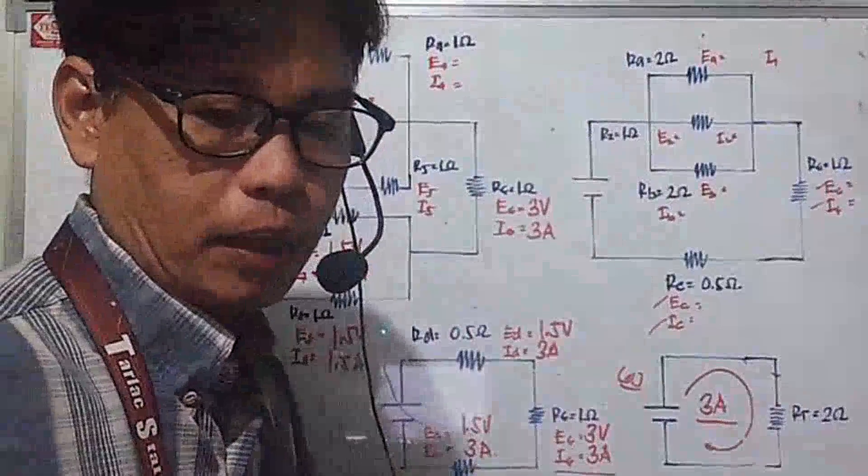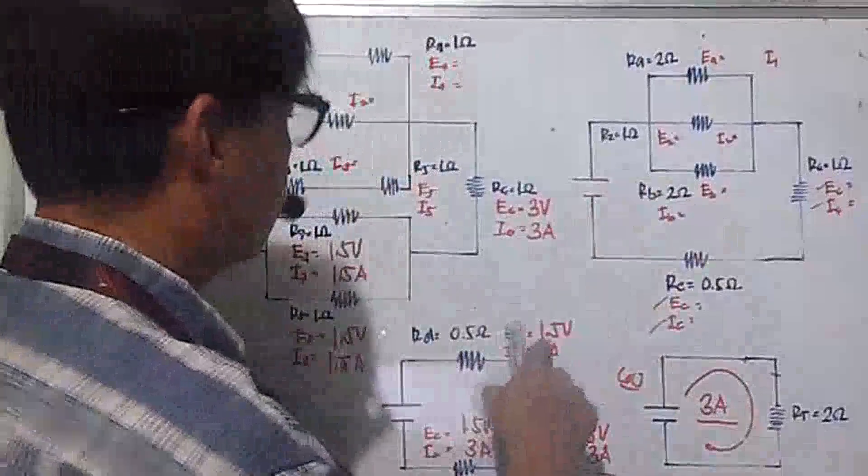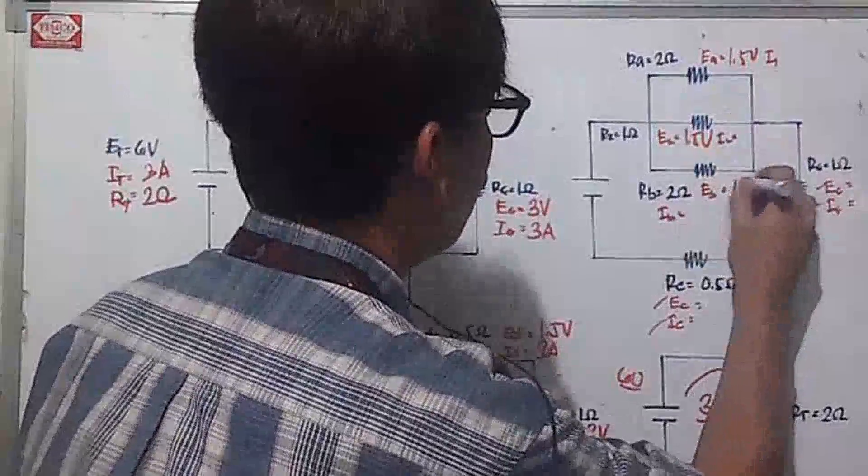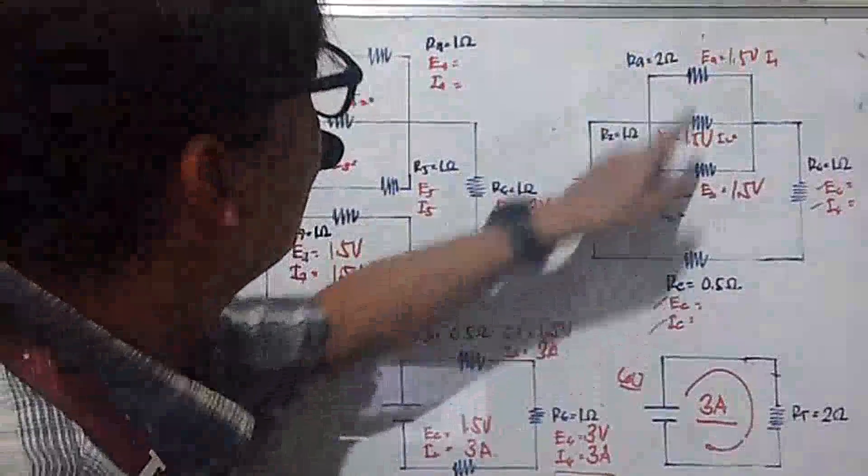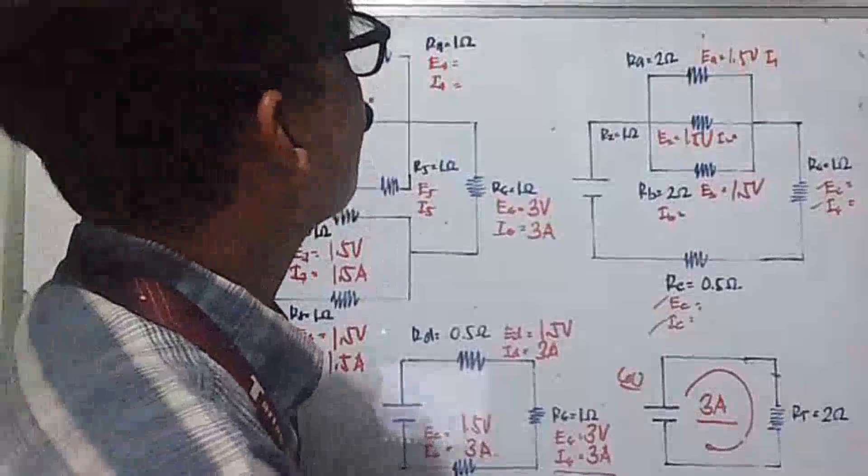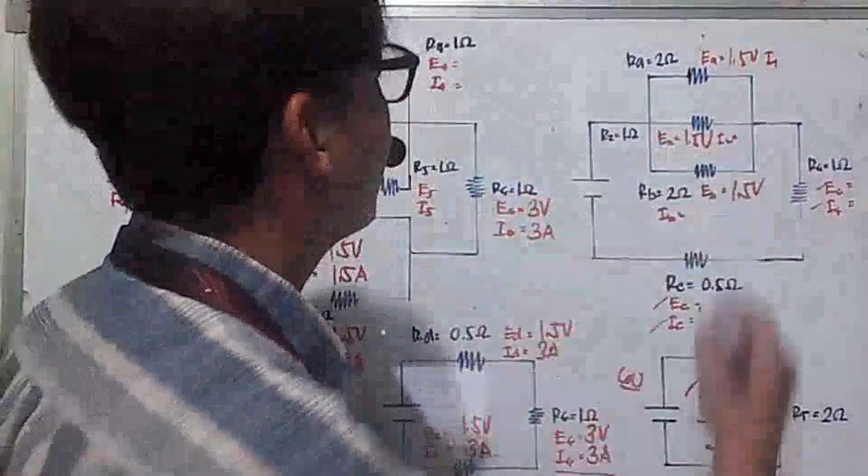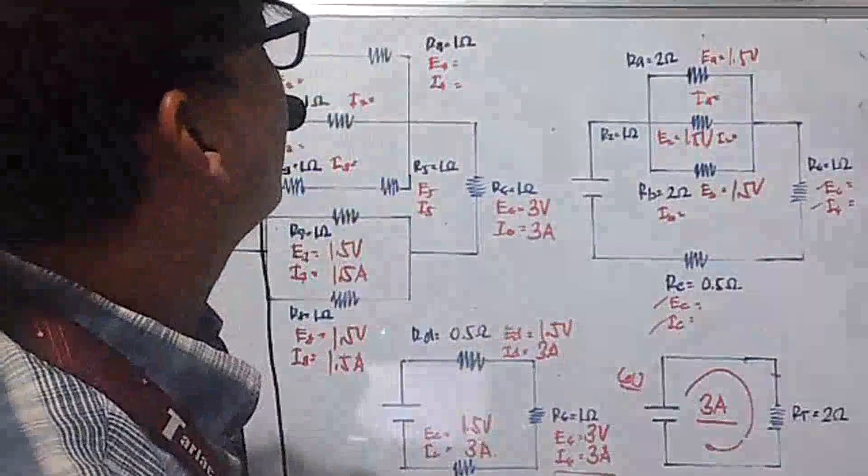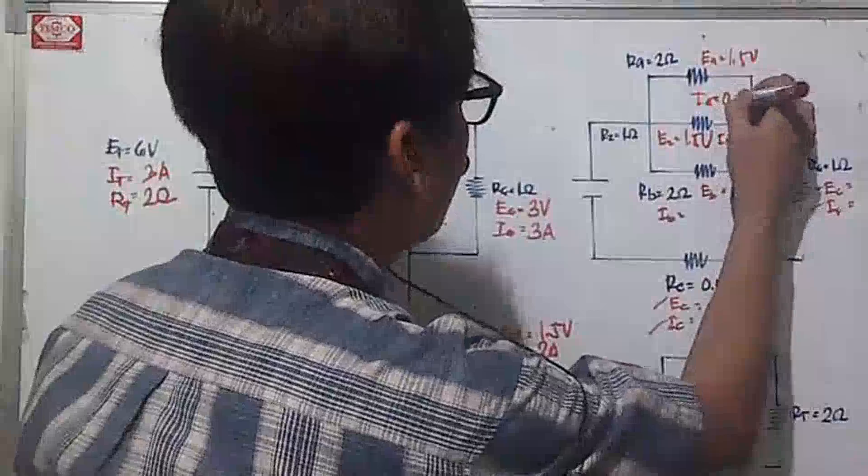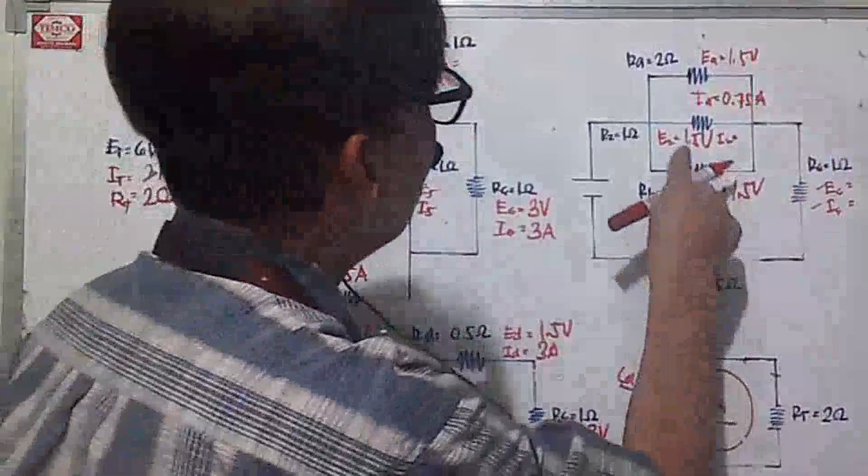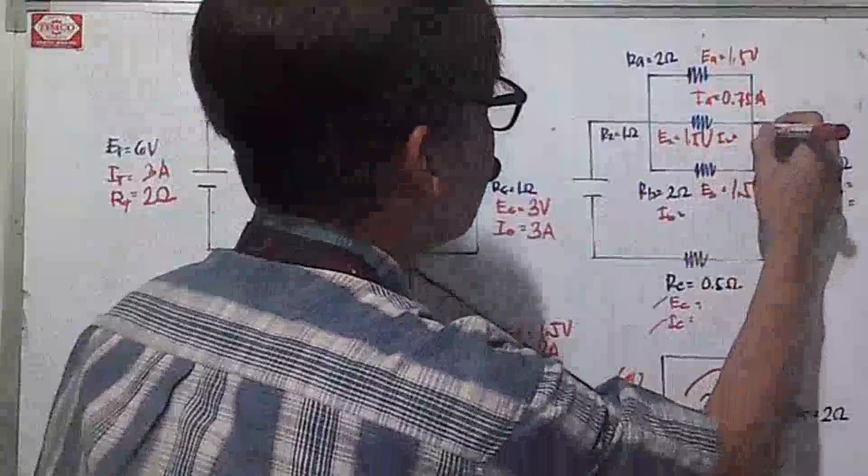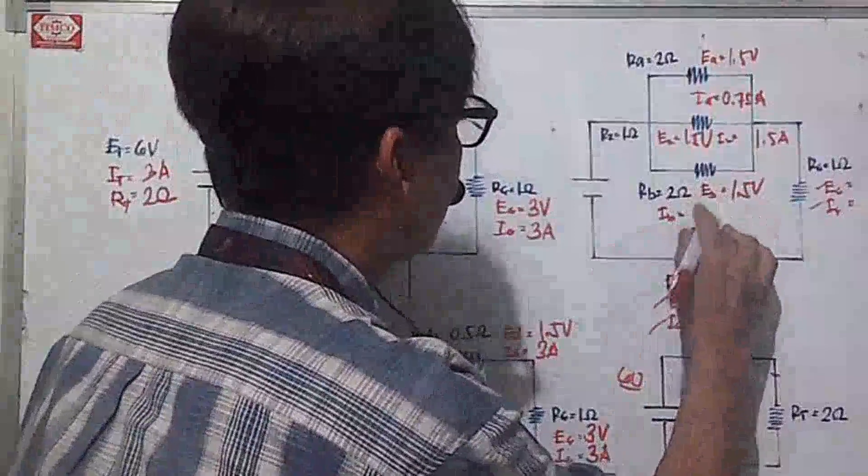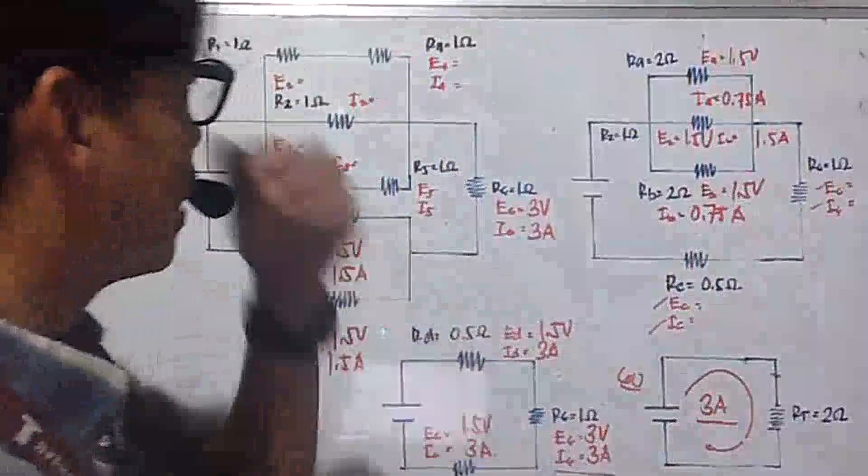So your RA now is equal also to 1.5 volts. And your E2 is 1.5 volts. And your EB is 1.5 volts. You're given your resistances and you have your voltages now, you can solve for the currents. So your IA, it is 1.5 divided by 2, so that is 0.75 amperes. Likewise, down here, it is 1 only. So 1.5 divided by 1 is still 1.5 amperes. And then, here it is 1.5 divided by 2, so it is 0.75 amperes.